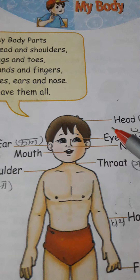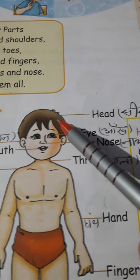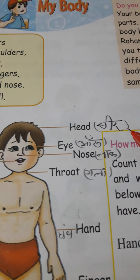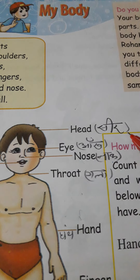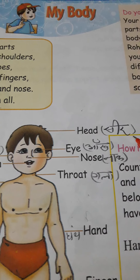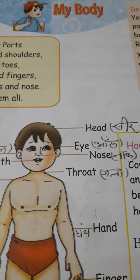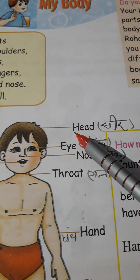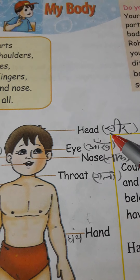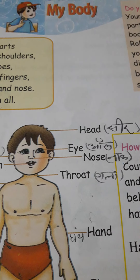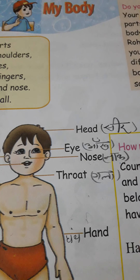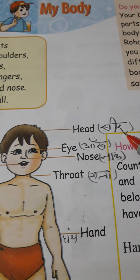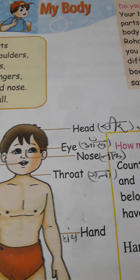First: this is 'head'. Head ka Hindi hota hai 'sareer' — head ka matlab kya hota hai? Sareer. Very good. Its spelling is H-E-A-D. Head matlab sareer. Iss Dhati bhasha mein sareer ko 'maatha' bhi kaha jata hai.